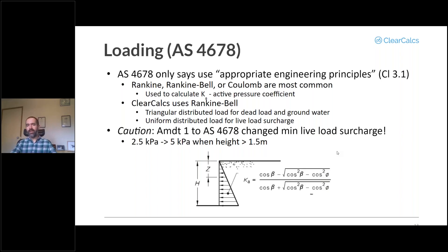Most common methods are Rankine, Rankine-Bell, or Coulomb. That's used to calculate what's called the active pressure coefficient. We use the Rankine-Bell equation. The main assumptions in that are that you have the dead load and the groundwater can be represented by a triangular distributed load, and the live load surcharge is represented by a uniform distributed load along the height of the retaining wall.